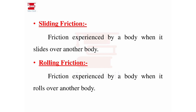The third is sliding friction or rolling friction. Sliding friction is experienced when a solid body slides over another surface. Rolling friction is the friction experienced by the body when the body rolls over a surface. So the four types are: static friction, dynamic friction, sliding friction, and rolling friction.